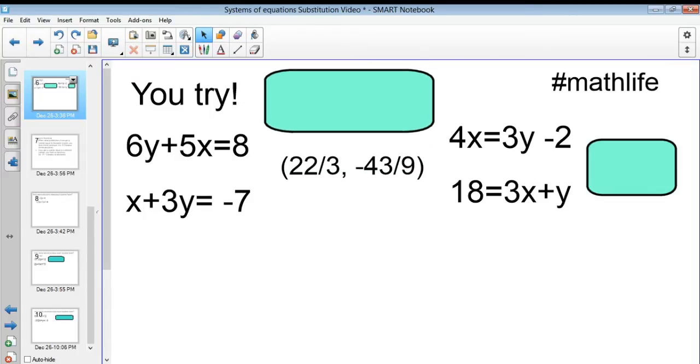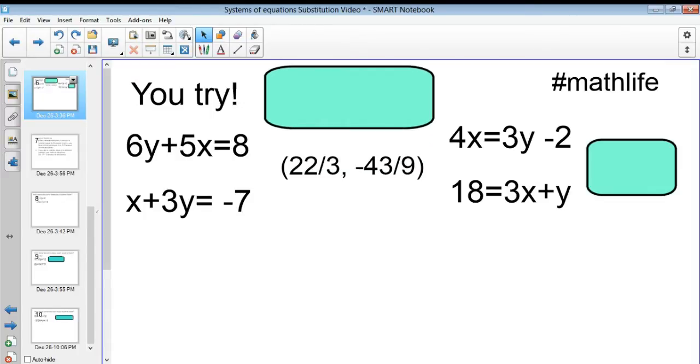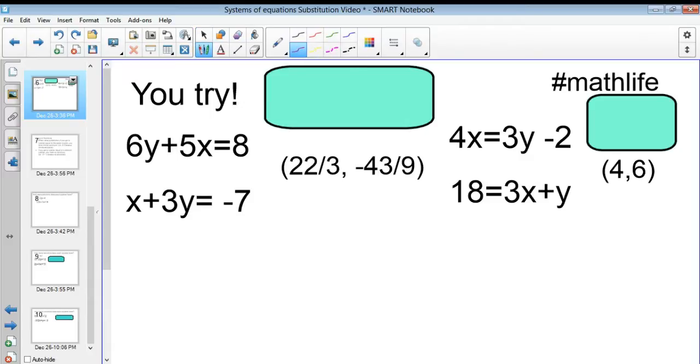And we're back. So, the answers are 22 thirds comma negative 43 ninths and then 4 comma 6. So, the second one's a little bit nicer, but if you didn't get these or just didn't get one of them, stick around. If not, fast forward to the next part where we talk about infinite solutions and no solutions.